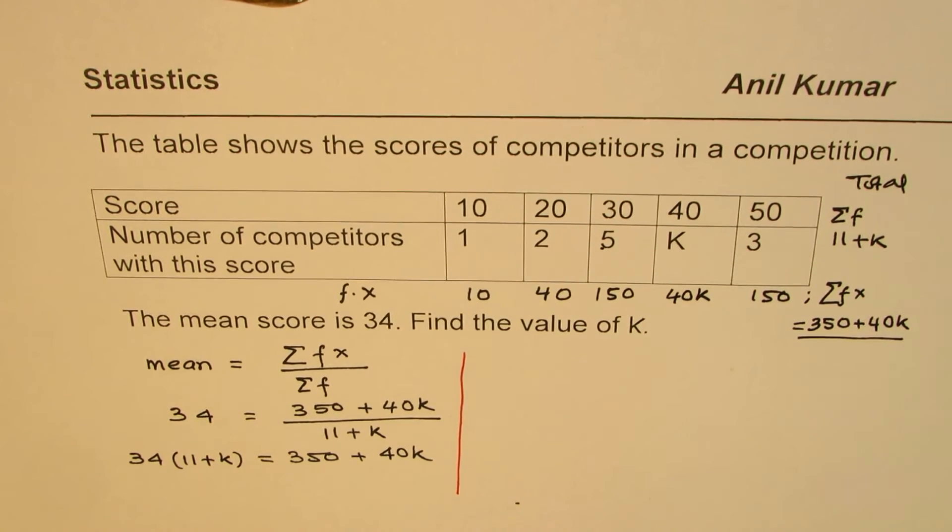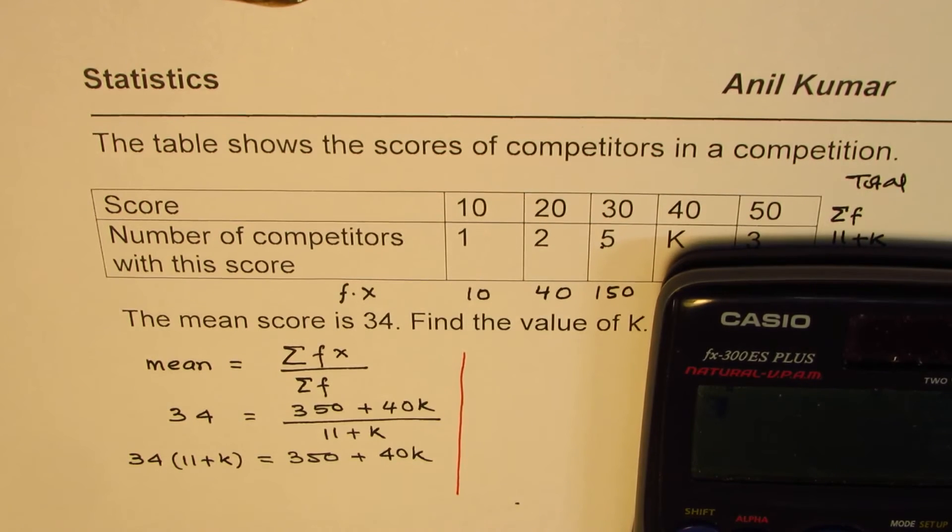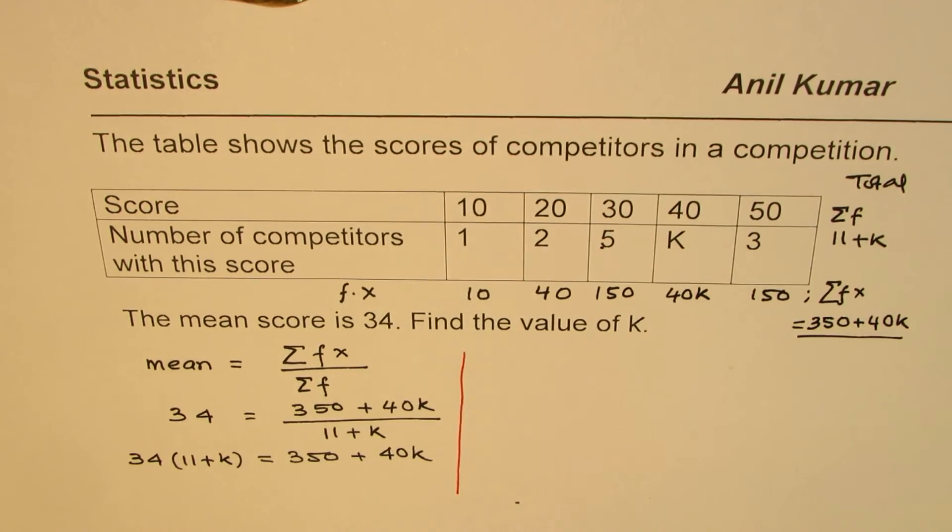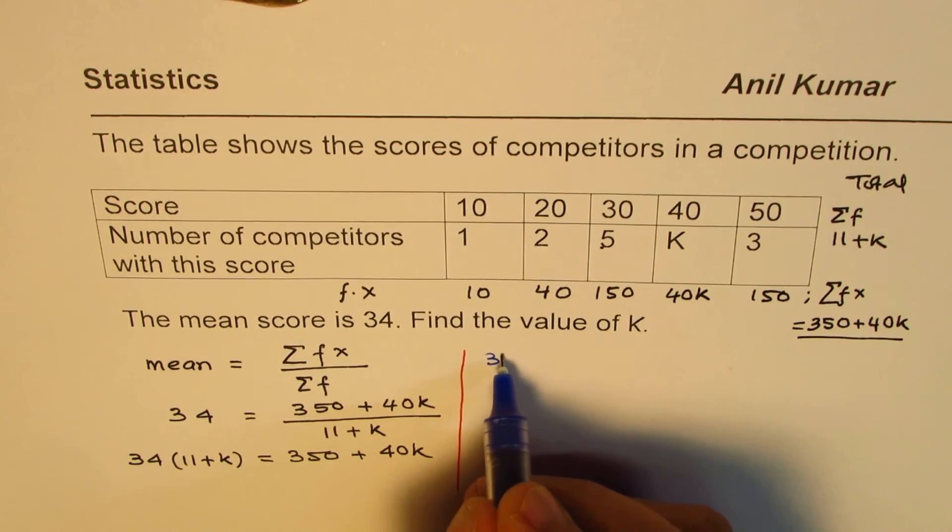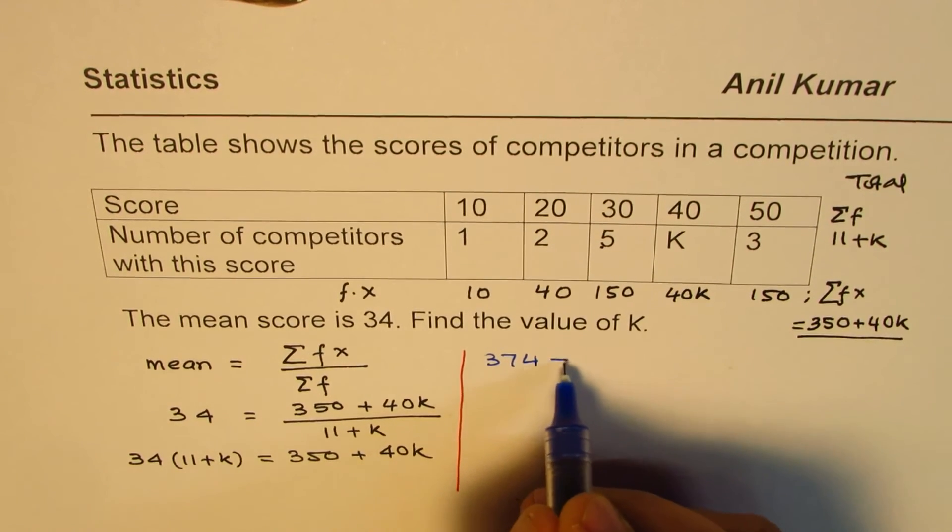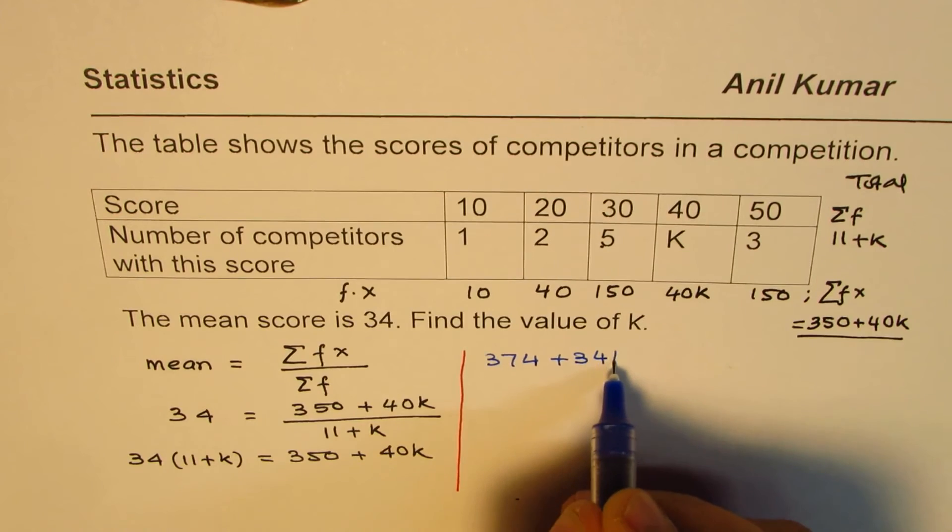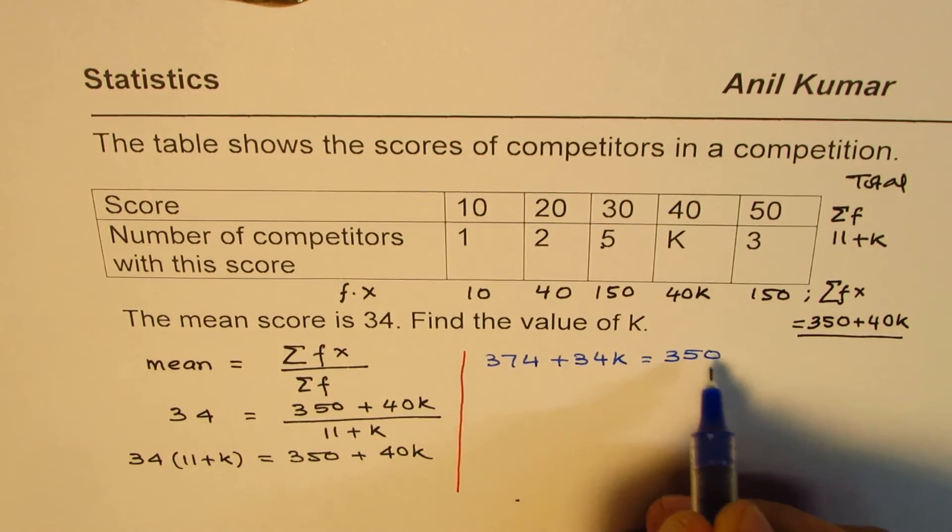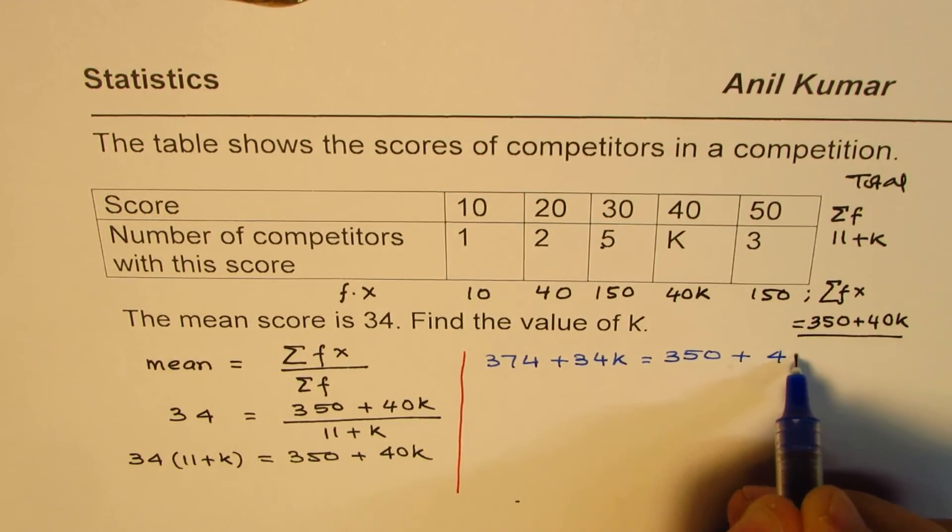Now we can solve for K from this particular equation. So we have 34 times 11 which is 374. So we can write this as 374 plus 34K equals to 350 plus 40K.